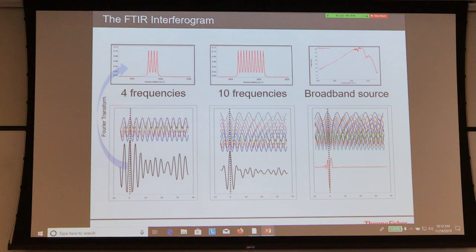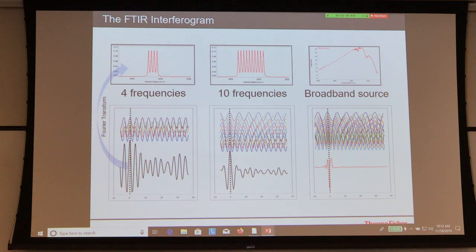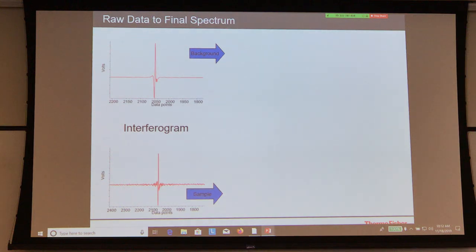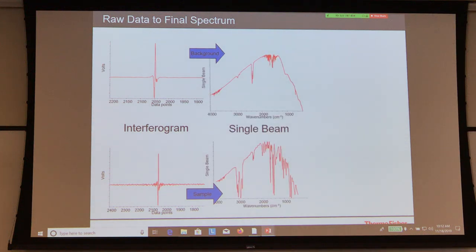Think about four frequencies — it can be as simple as that. Ten frequencies can look more complicated, but what we work with in mid-infrared is an entire region from about 400 to 4,000 wavenumbers. This is a very broad region from a broad source. You end up seeing a really nice center burst with the rest as a flat region — that is your interferogram. The instrument collects the interferogram; all the magic after that is done by the computer. The instrument will collect a background, collect a sample, and from there the software takes over.